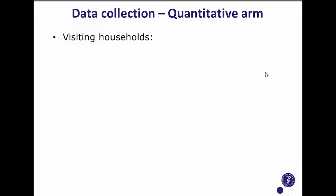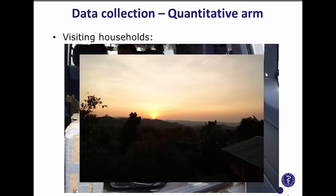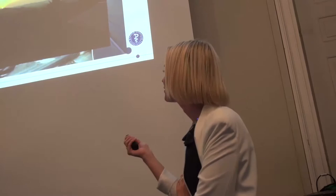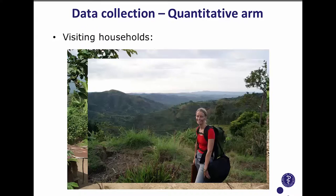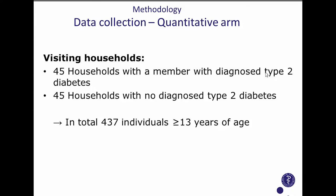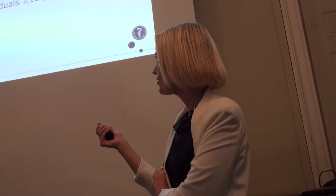For data collection, we packed a lot of equipment into the car and tried to reach households at sunrise to measure fasting blood plasma glucose and ensure people had not left for the garden. Most households had no mobile phone, so we had to arrive before they forgot we were coming. For some households we drove all the way up; for others we had to walk up the mountains for an hour carrying 75 kilograms of equipment. In total, we visited 90 households, half with one member with diagnosed type 2 diabetes, giving us 437 individuals above 13 years of age.